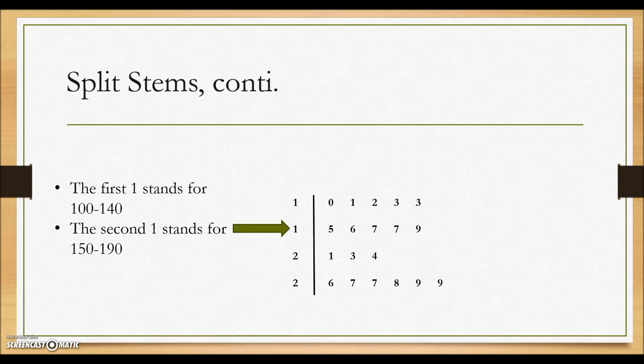With this split stem, it has spread our data out further. We now see where the least frequent range is, the 200 to 240, and the largest frequency being the 250 to 290 category.